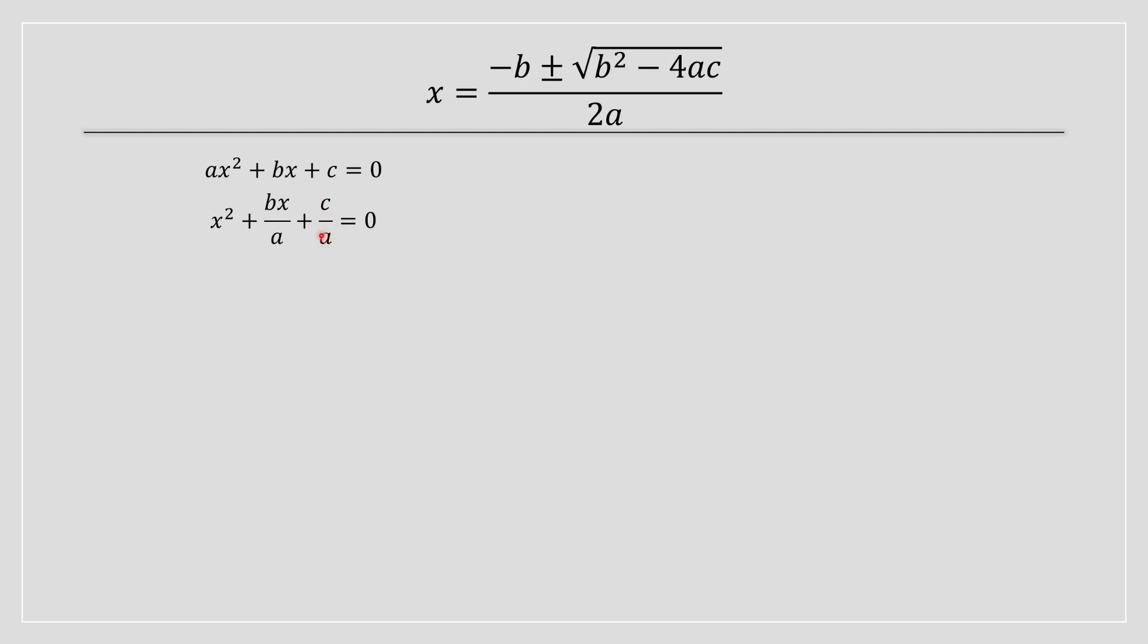c divided by a, we're going to move it to the right-hand side of this equation. So once you do that, it's going to become negative.